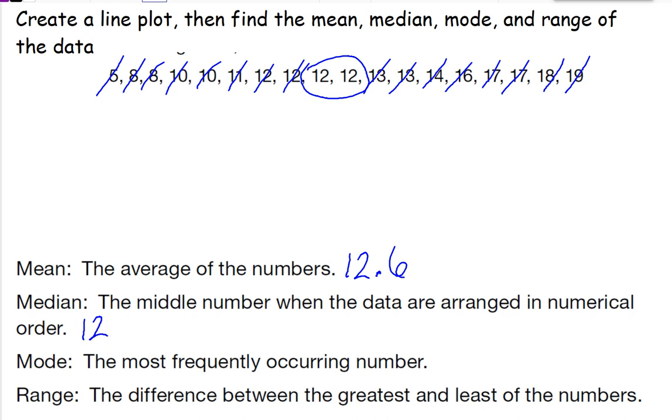The mode is the most often repeated number. So if we look at my data, the number that's repeated the most is 12. Now the median and mode aren't always the same. They can be, but they don't have to be. Now the range is the biggest number minus the smallest number. So I'm going to do 19 minus 5. 19 minus 5 is 14. So the range of the numbers is 14. In other words, meaning that there are 14 places between the smallest number and the biggest number.